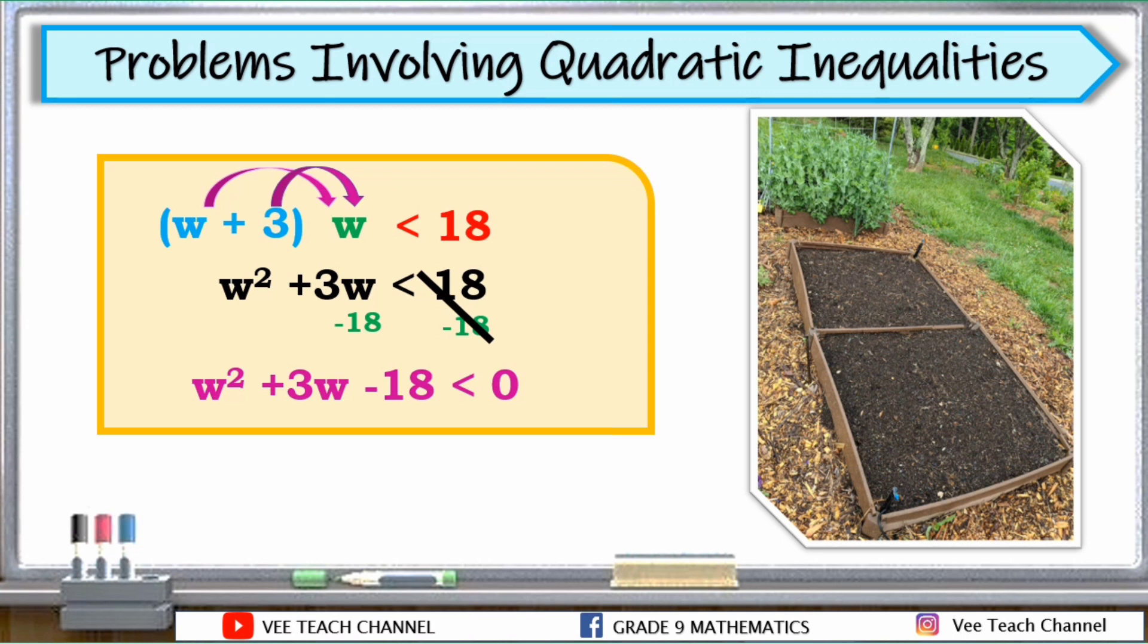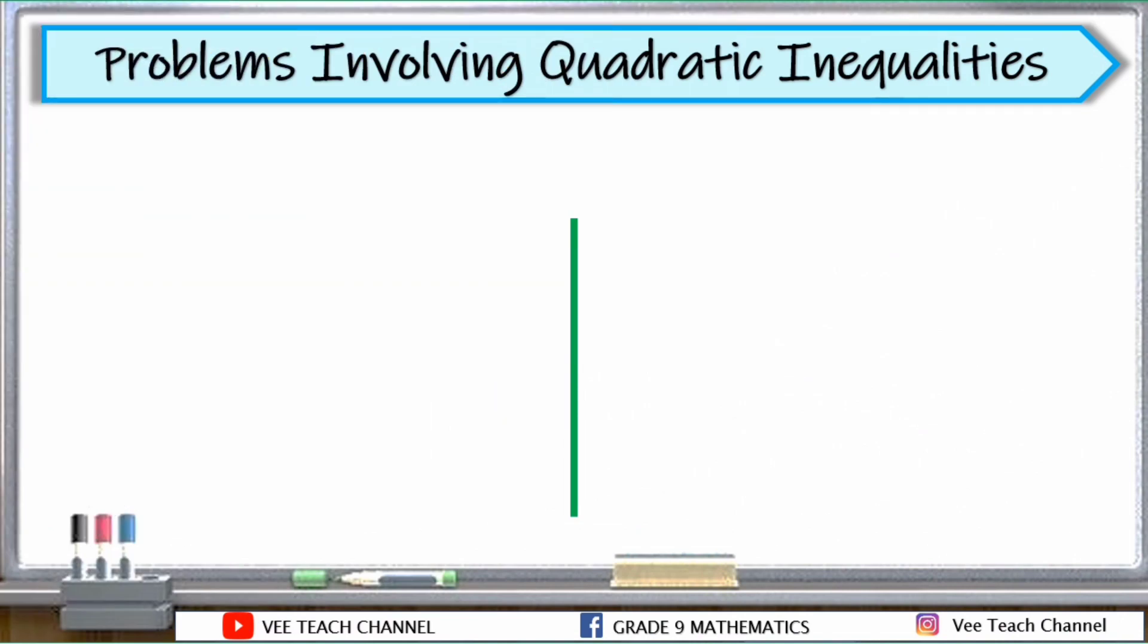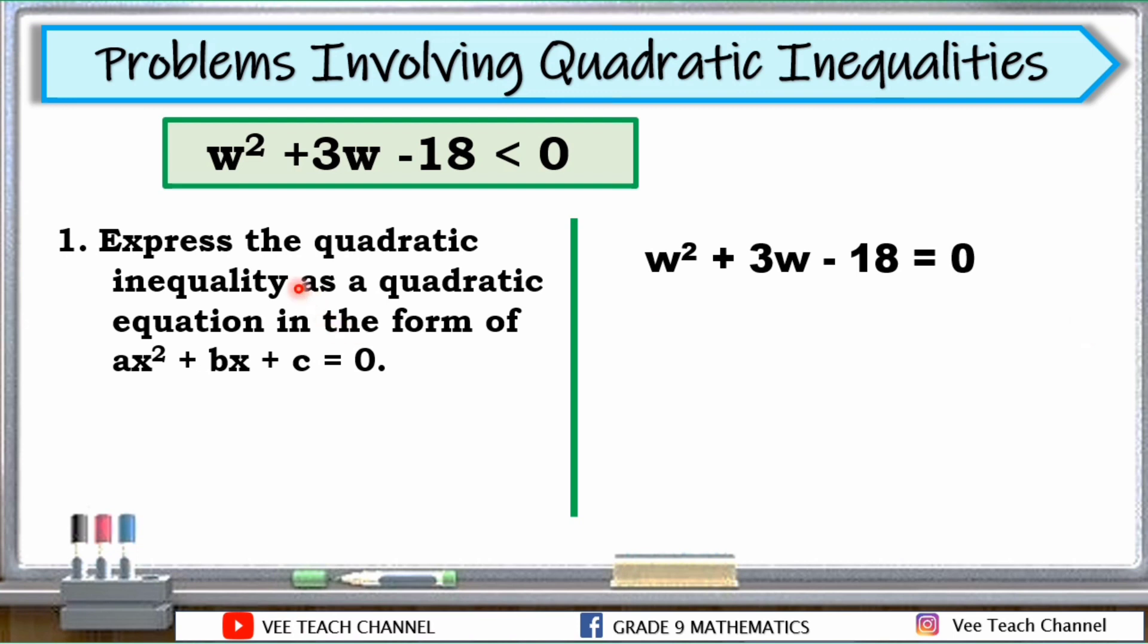And since we have this, we can now solve for the possible values of W. Sa quadratic inequality din po, pwedeng marami tayong solution. Always remember that. This is our quadratic inequality. And the first thing to do is to express the quadratic inequality as a quadratic equation in the form of AX squared plus BX plus C is equal to 0. We will change the inequality symbol into equal sign. Just copy the given, but don't copy the inequality. Instead, put an equal sign there.